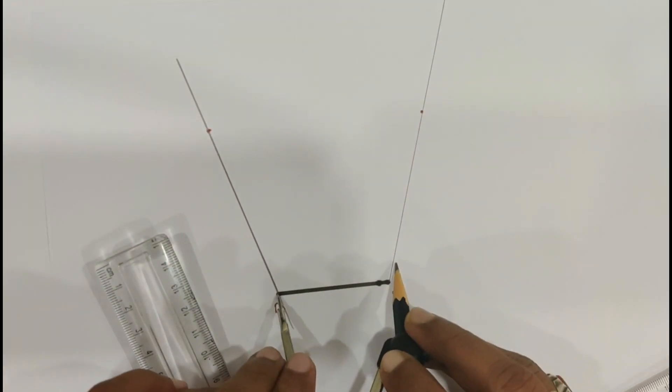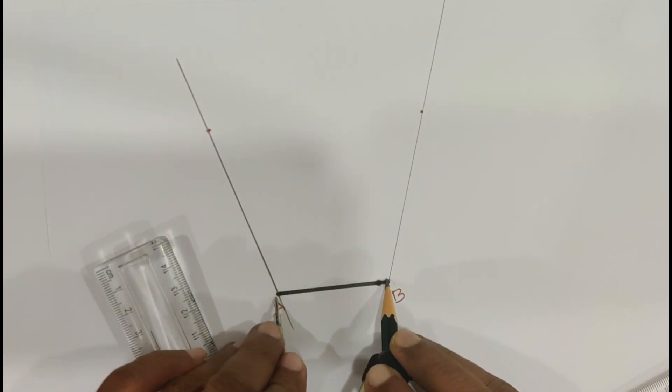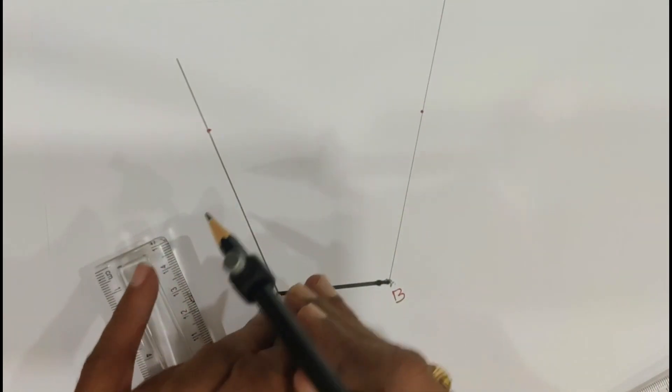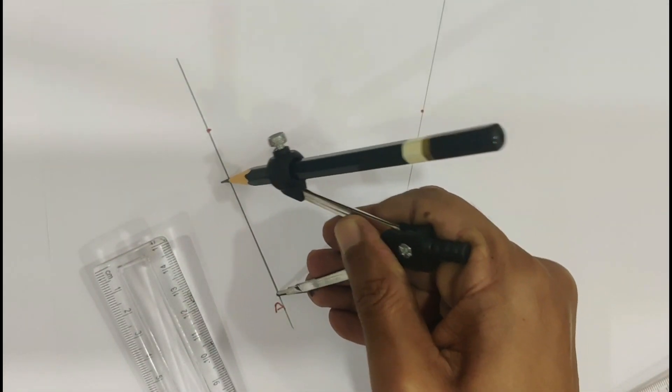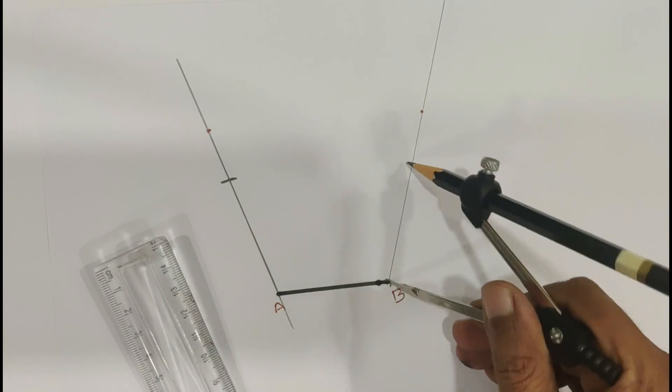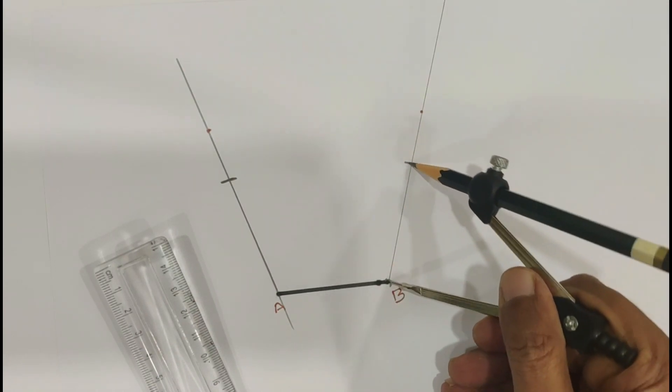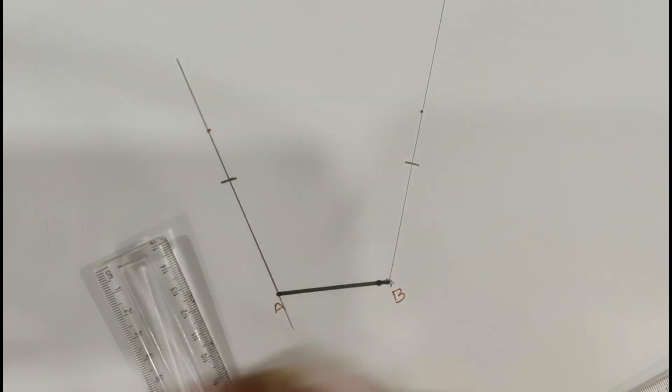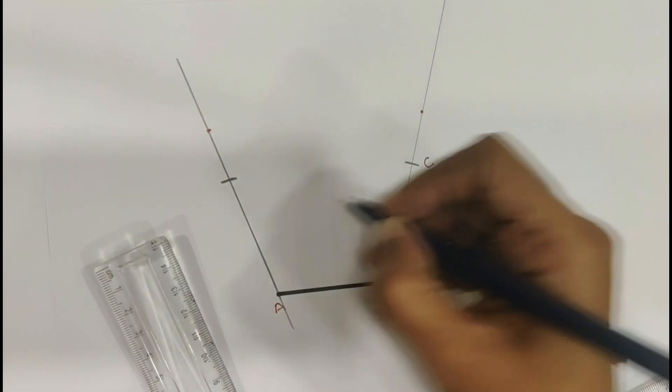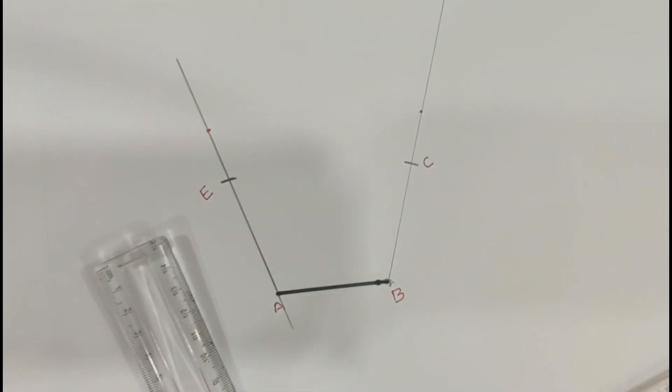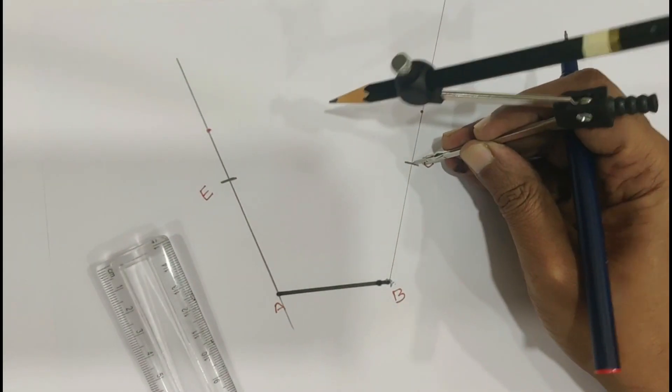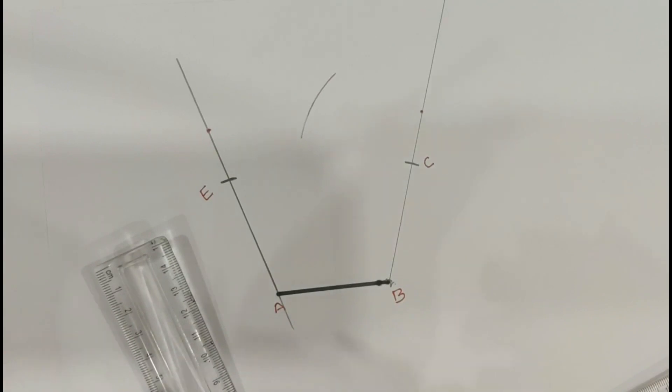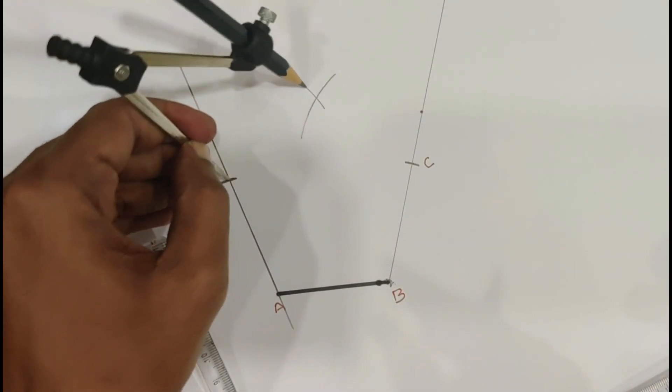Then AB as a radius, A as a center, draw an arc here. B as a center, draw an arc here. Then name this one as C and this one as E. C as a center with the same radius, draw an arc. E as a center with the same radius, draw an arc.